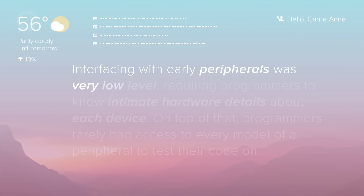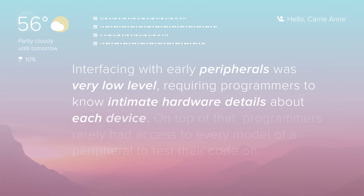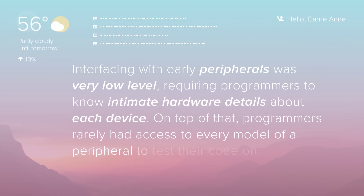Interfacing with early peripherals was very low-level, requiring programmers to know intimate hardware details about each device. On top of that, programmers rarely had access to every model of peripheral to test their code on, so they had to write code as best they could, often just by reading manuals, and hope it worked when shared. Things weren't exactly plug-and-play back then — more plug-and-pray. So to make it easier for programmers, operating systems were implemented as intermediaries between software programs and hardware peripherals.